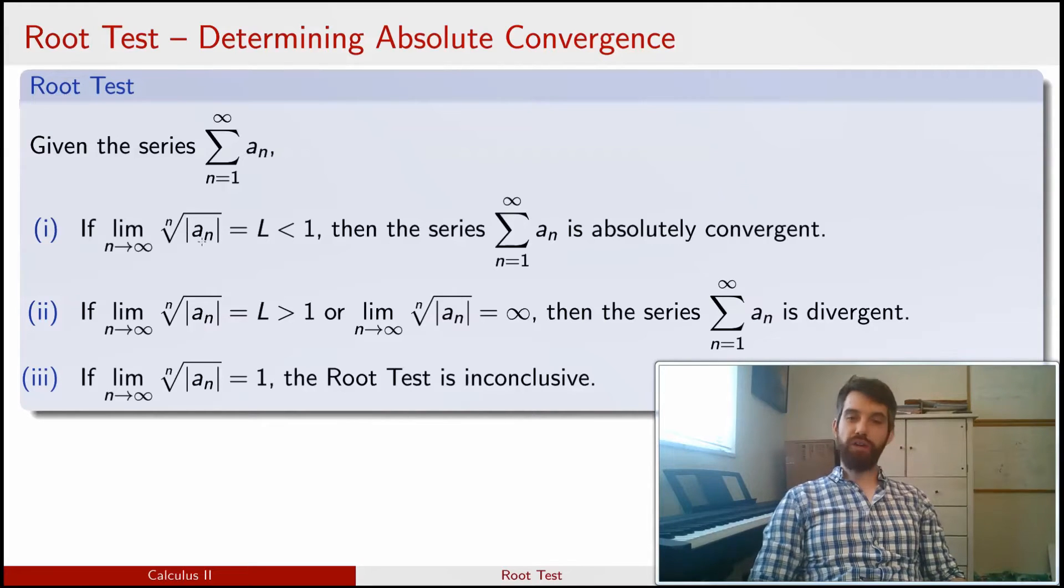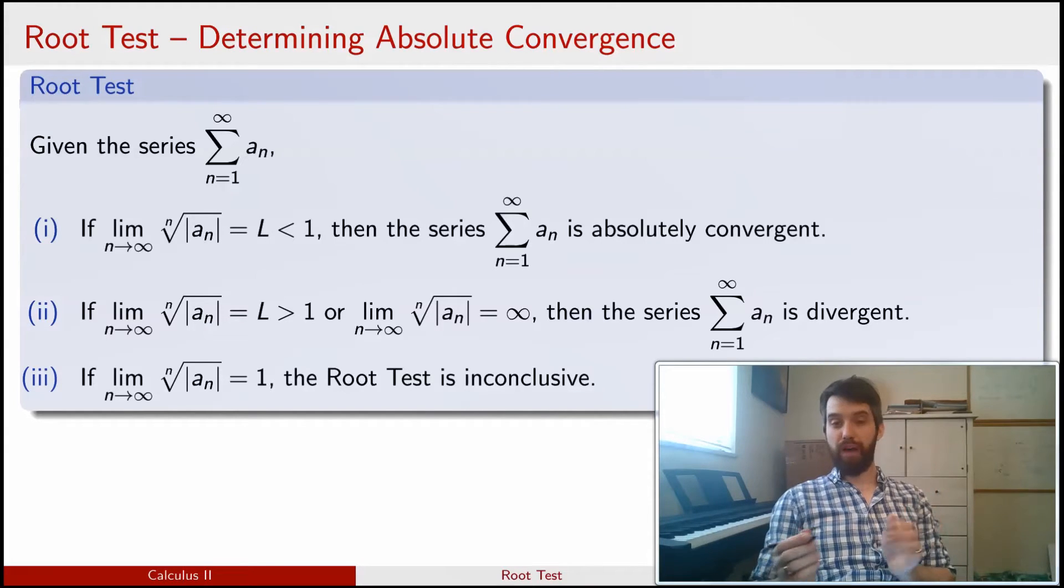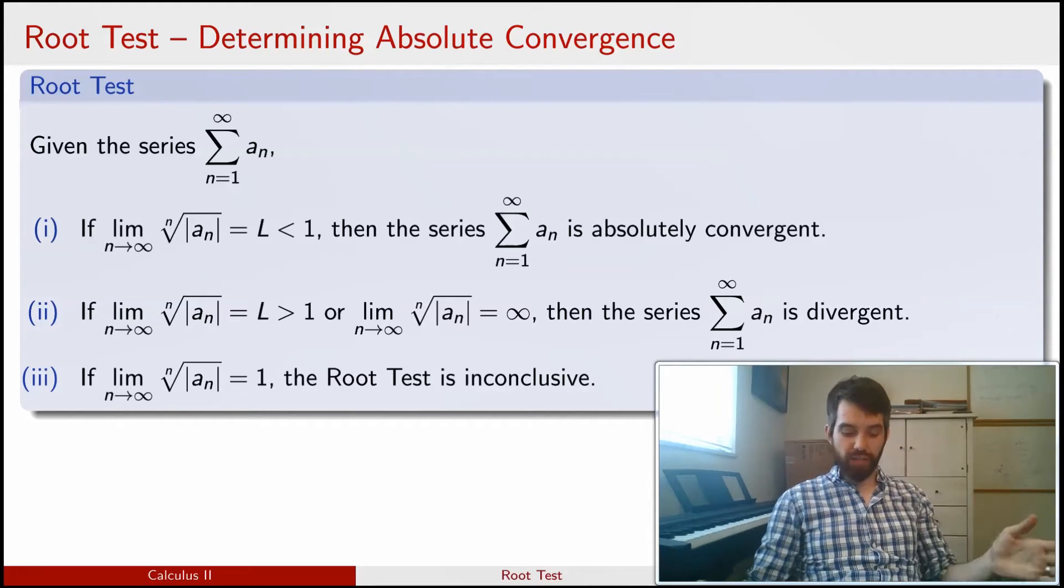So as n gets large, for n equal to 1 this is just going to be a_n or the absolute value of a_n, then it's going to be the square root of a_n, the cubed root of a_n, the fourth root of a_n, and so on.